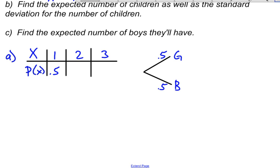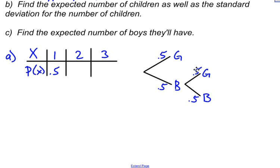If they have a boy first, they'll try for a second child, who is either going to be a girl or a boy. Because each child is independent, this child is also 50% girl and 50% boy. If they have a boy and then a girl, they stop. So the probability of having two children is 0.5 times 0.5, which is 0.25.